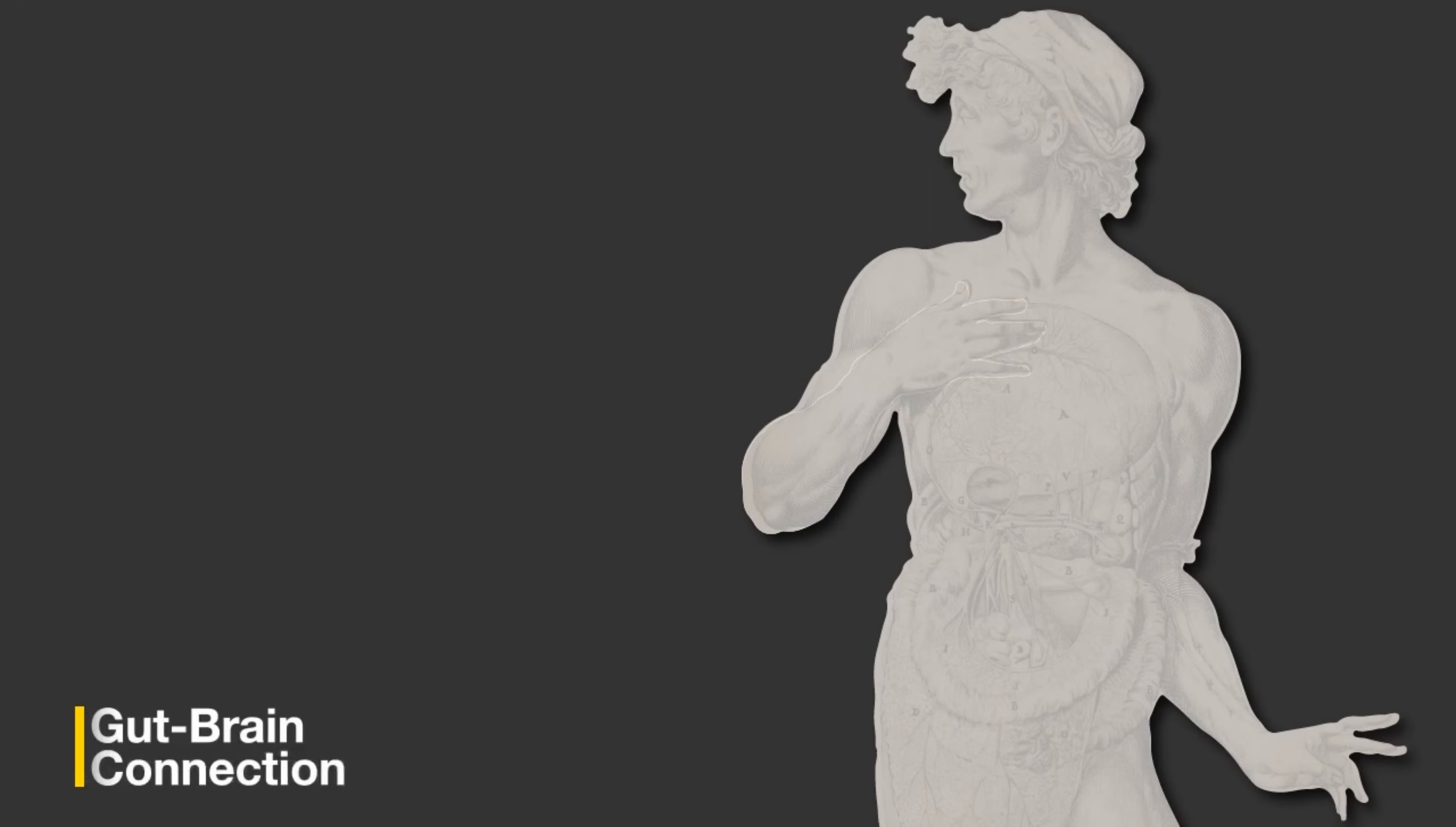How the gut and the brain communicate has fascinated us for centuries. The gut-brain axis transforms information via the vagus nerve from food to feelings.